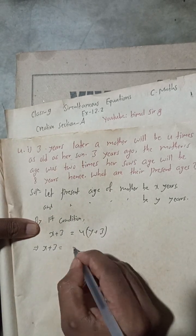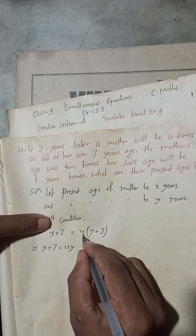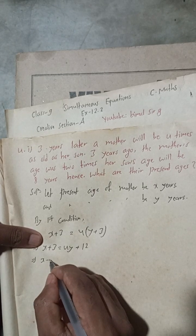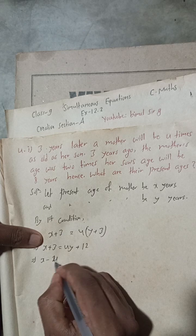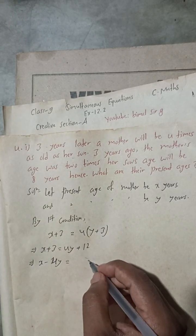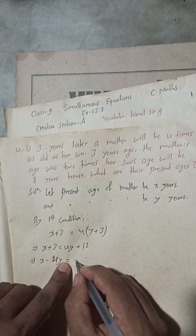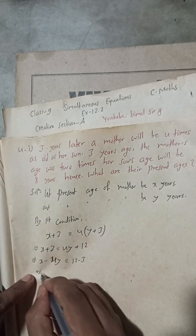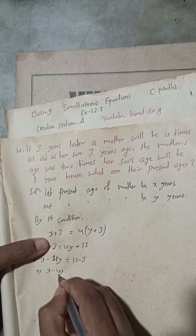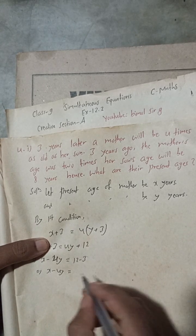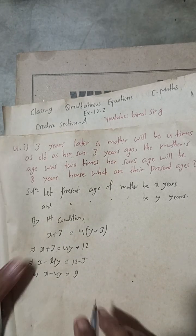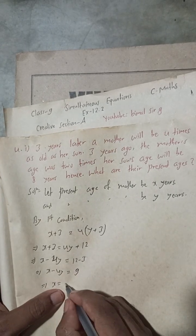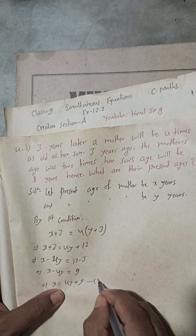This implies x + 3 = 4(y + 3), which gives x + 3 = 4y + 12. Therefore x − 4y = 12 − 3 = 9. So equation 1 is: x = 4y + 9.